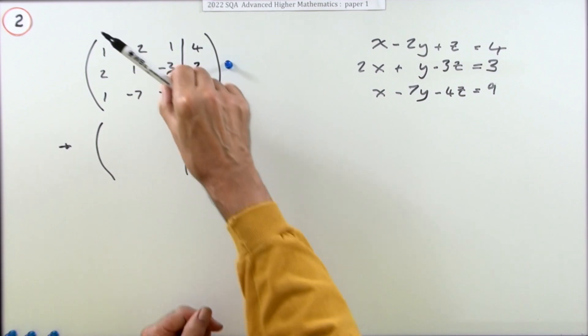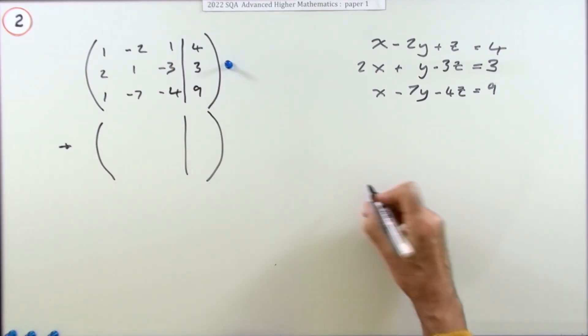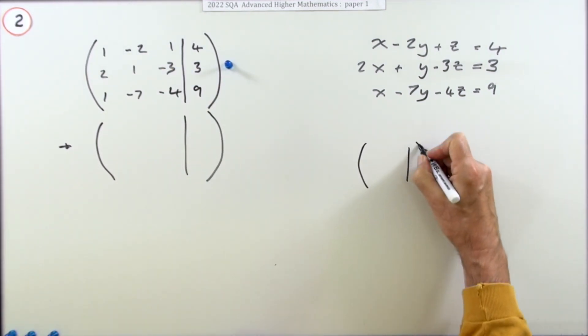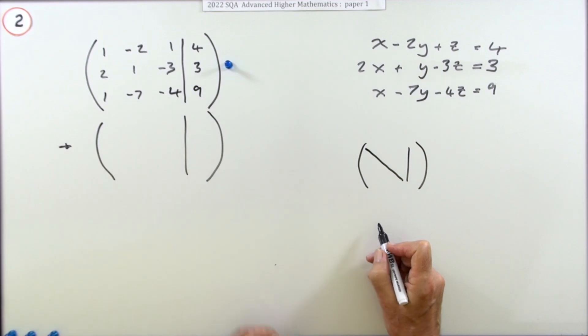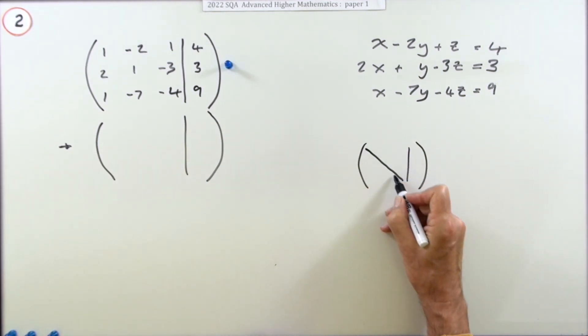You want it to end up looking like this: you want this part here, this little square matrix - that's the main diagonal 1, 1, -4 - you want that to be in upper triangular form. What that means is you've got the entries in the main diagonal, you've got entries up here (that's the upper triangle), but you've got nothing down here - you've got zero entries down here.